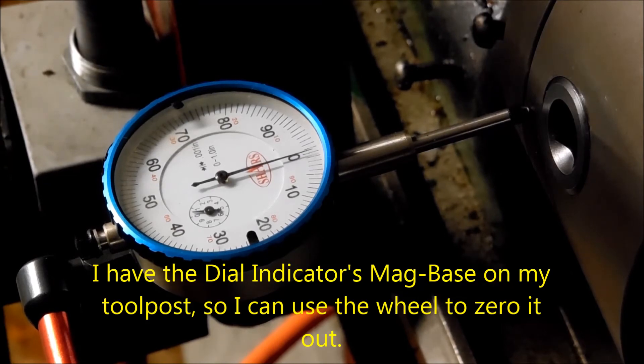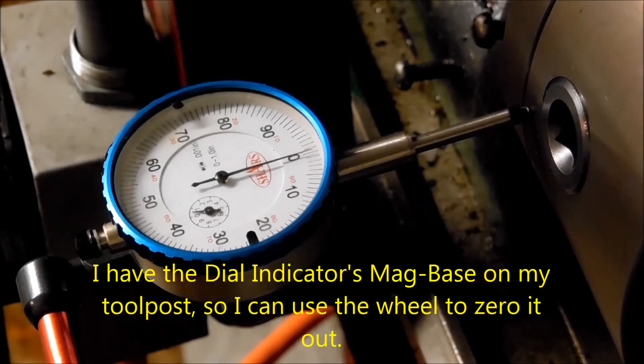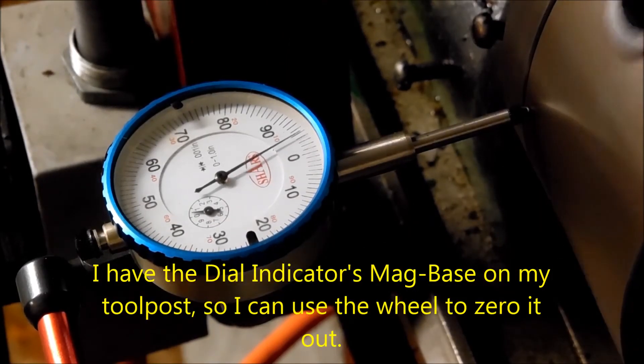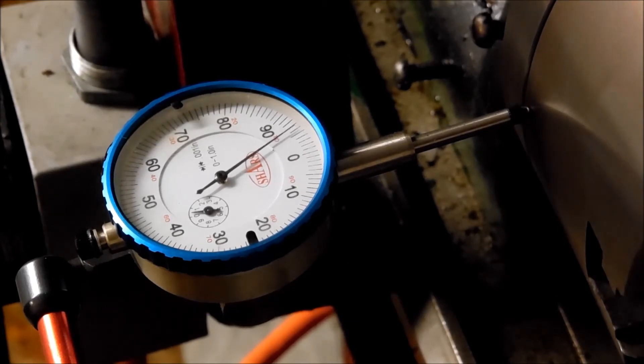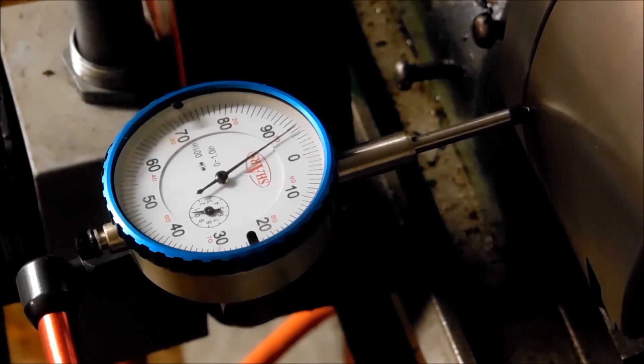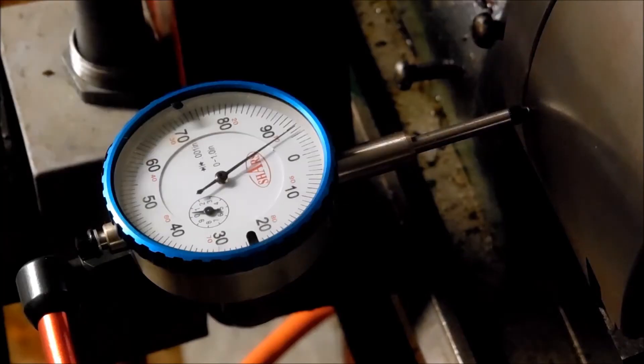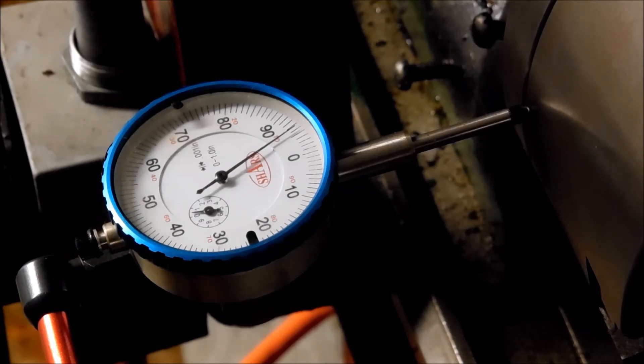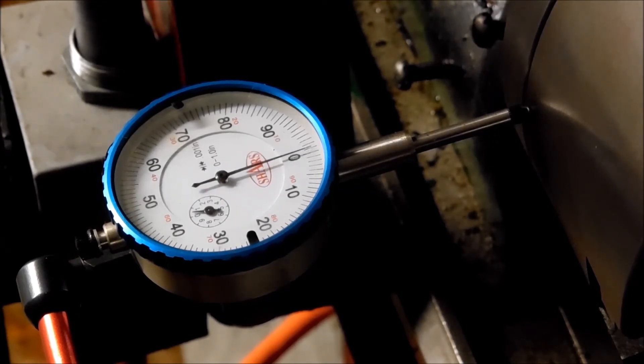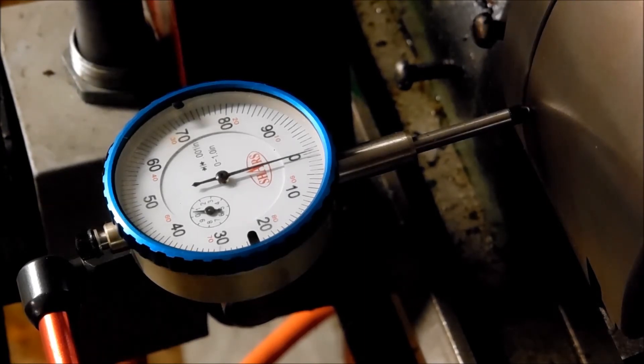Actually, I should do it at the high spot so I can get a positive number, but I think we can all count backwards. Yeah, right there. Six and a half. Runout on the chuck is not good enough. Not for me. So, I'm gonna do some fixing of the chuck. Gotta fix the three jaw before I can fix the drill chuck.